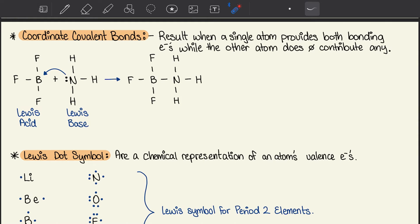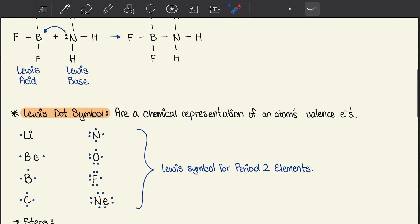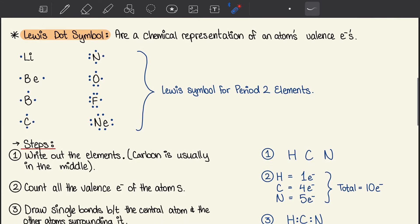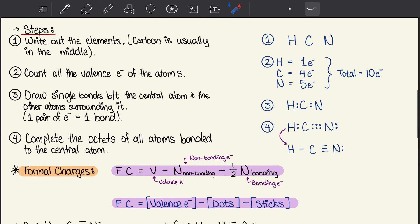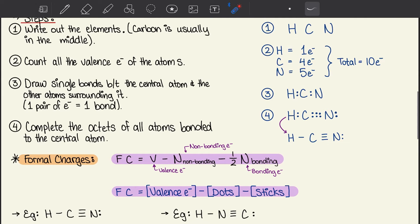Moving on to Lewis dot symbols. These are chemical representations of an atom's valence electrons. Lithium has one, beryllium has two, boron has three, carbon has four, and so on. These are the steps on how to write Lewis dot symbols. Step one: write out the elements. If you have carbon, carbon is usually in the middle. With the example, we have HCN, and I've put C in the middle.